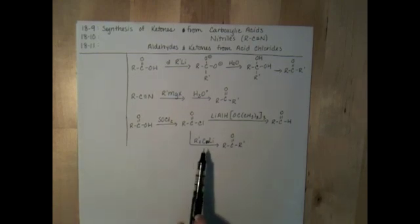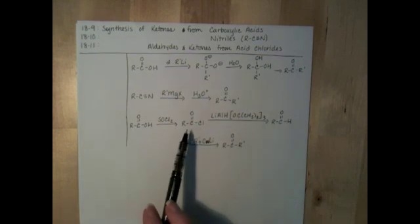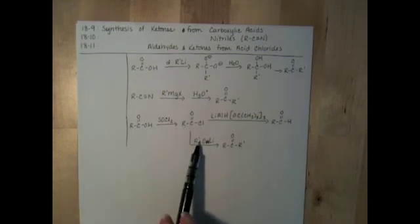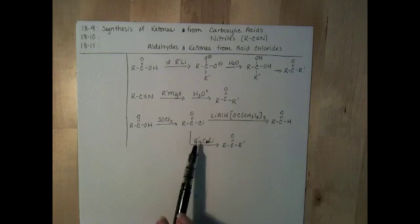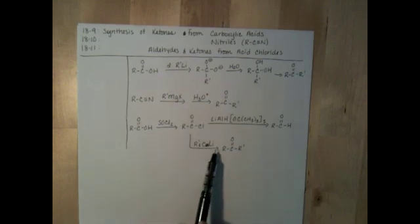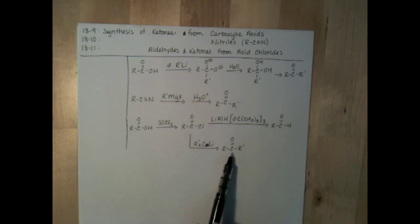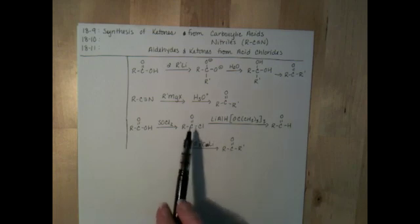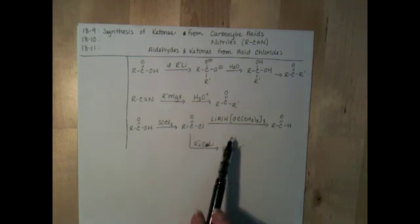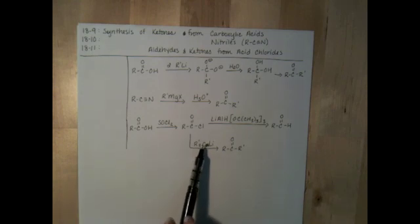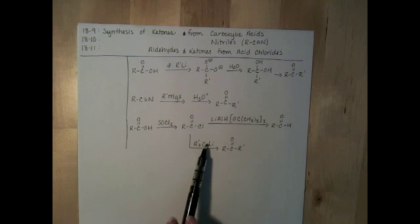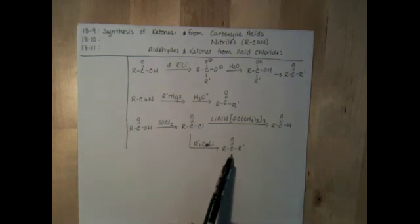The lithium dialkyl cuprate reagent is reactive towards acid chlorides. It's very similar to a Grignard or an organolithium. It's reactive towards acid chlorides, but it's not strong enough to react with a ketone. So you're able to do this synthesis and stop it at a ketone. If you tried to use a Grignard here or if you tried to use an organolithium reagent here, you would get further reaction with the ketone to make an alcohol.